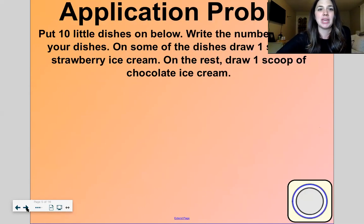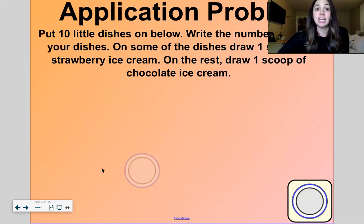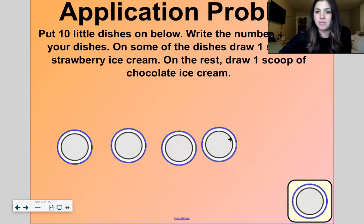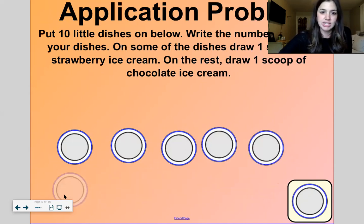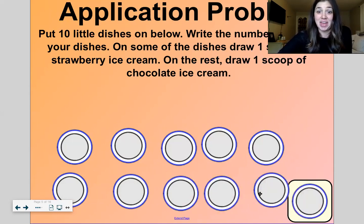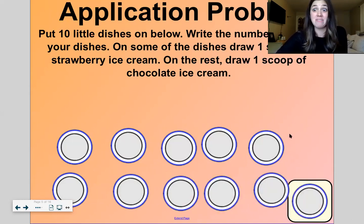All right, we're going to move into our application problem now. Put ten little dishes below. Okay, count. One, two, three, four, five, six, seven. We're having a lot of people at this party. Eight, nine, ten. Ten, okay, two rows of five, that makes ten. Five and five is ten.